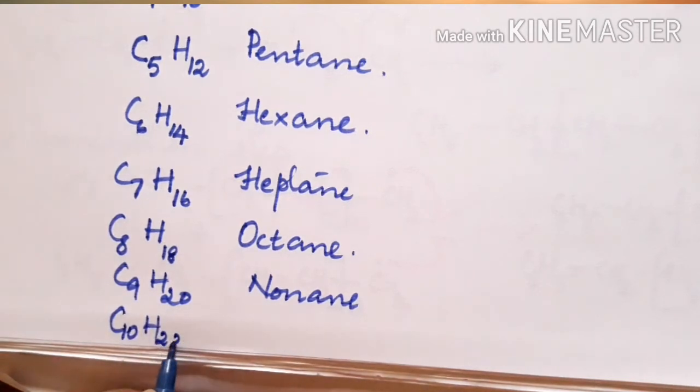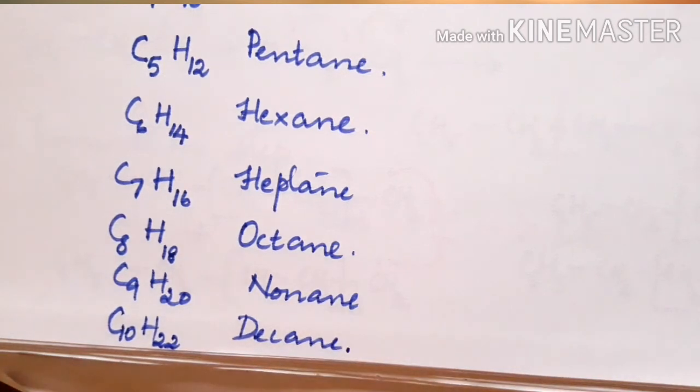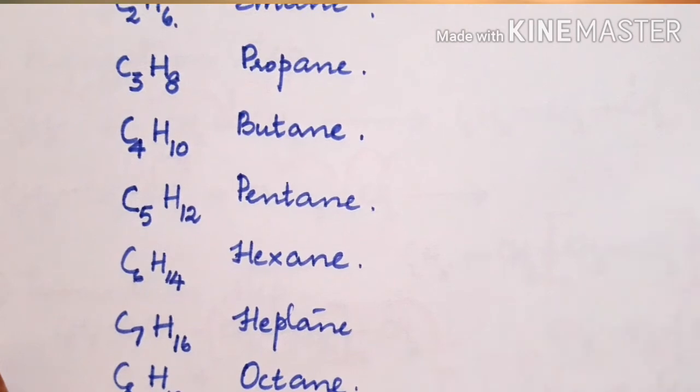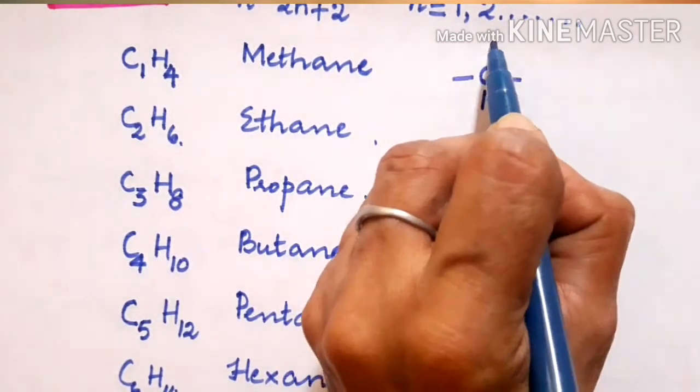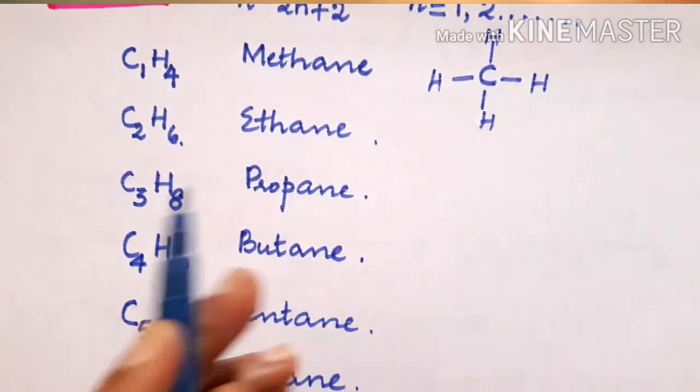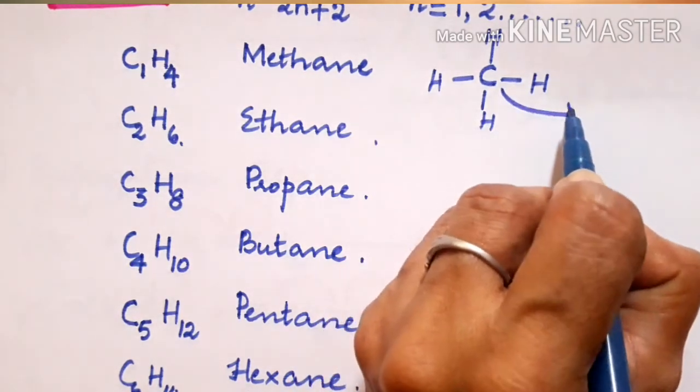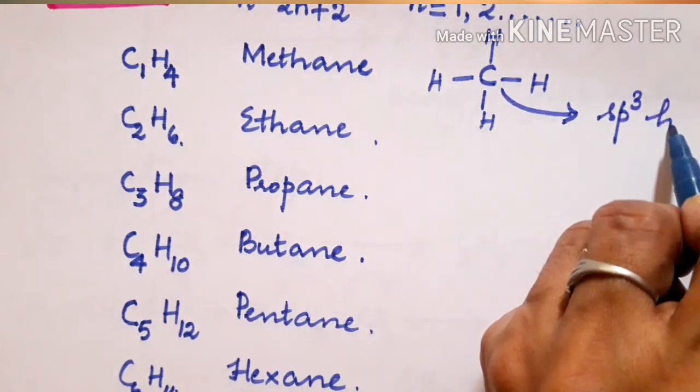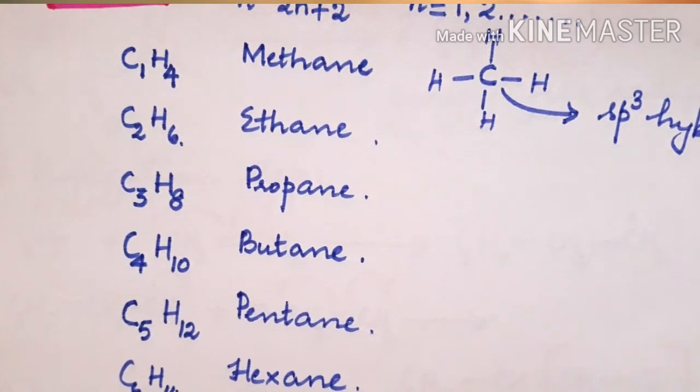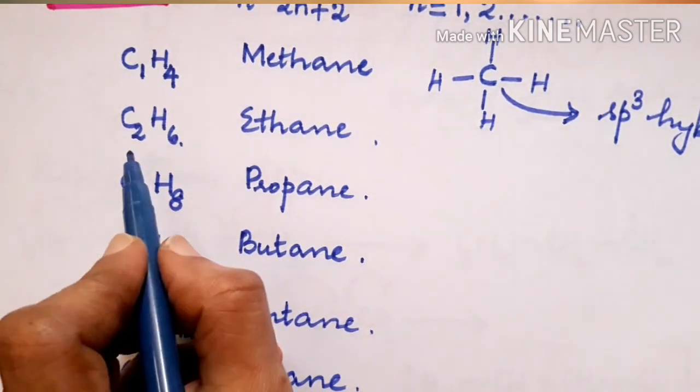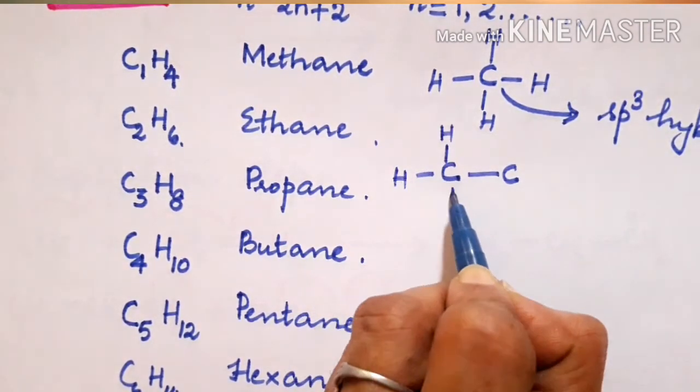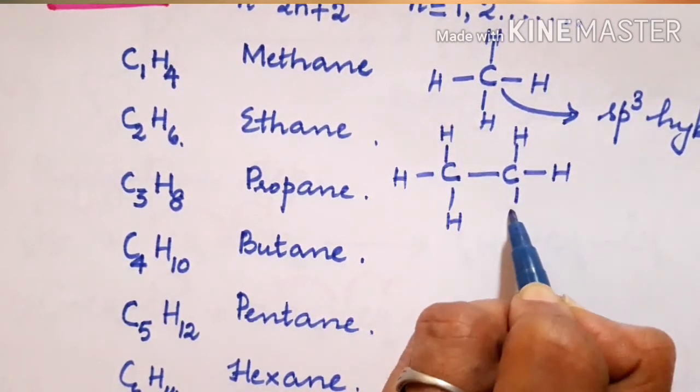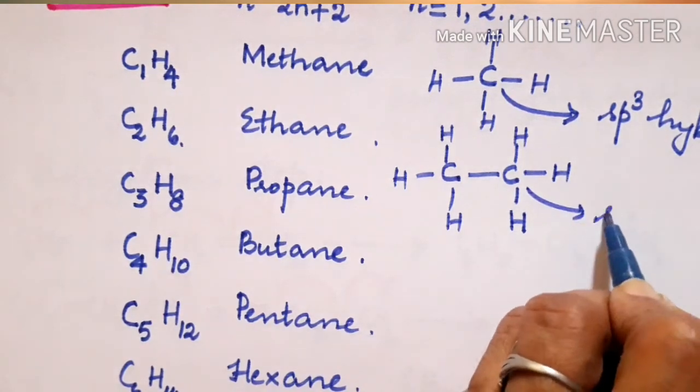The simplest hydrocarbon is methane with the formula CH4. It has only single bonds around it, so this carbon will be sp³ hybridized. Similarly, the structure of C2H6 ethane can be written with two carbons bonded together. These carbon atoms are sp³ hybridized.